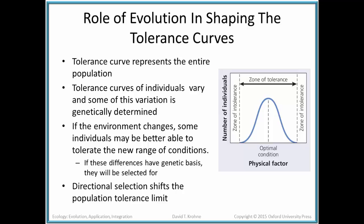Tolerance ranges or tolerance curves represent an entire population — all the individuals in a particular area. The tolerance curves for each individual may vary, and some of this variation may be genetically determined or inheritable. We know that environments don't remain constant, so if the environment changes, some individuals may be better adapted to tolerate the new range of conditions than others. And if these changes are inheritable, they will be selected for. This is evolution — specifically, directional selection.